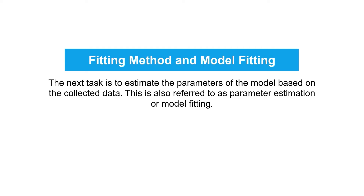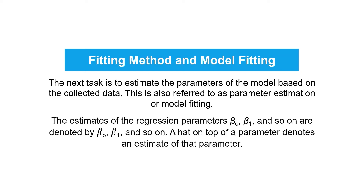Also, for our demonstration, we will be focusing much on this process. The estimates of the regression parameters beta sub 0, beta sub 1, and so on are denoted by beta-hat sub 0, beta-hat sub 1, and so on. A hat on top of a parameter denotes an estimate of that parameter.